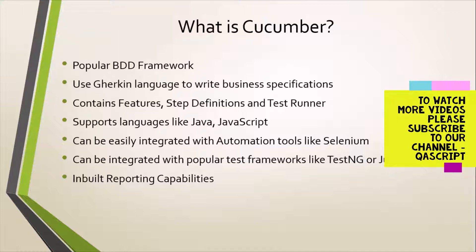The specialty of Gherkin language is it's mostly similar to English. If you write something in the Gherkin language, anybody looking at the file can understand what's going on, what the different steps are, and it's crystal clear — even if a business owner or a client is reading those specifications. As I mentioned, the components of Cucumber are feature files, step definitions, and test runner. In the next slide, I will show you how these different files look and how they work together.